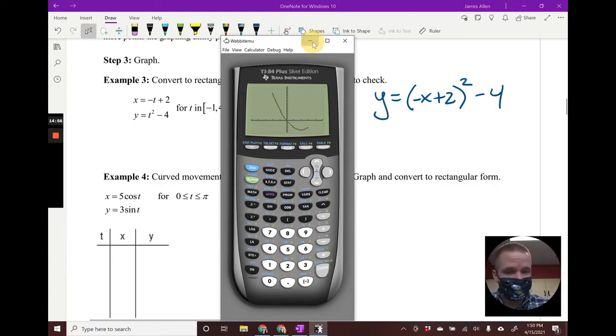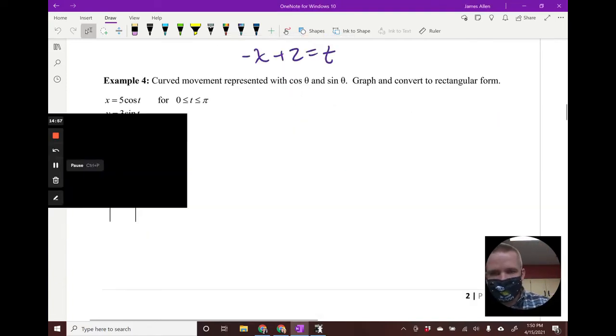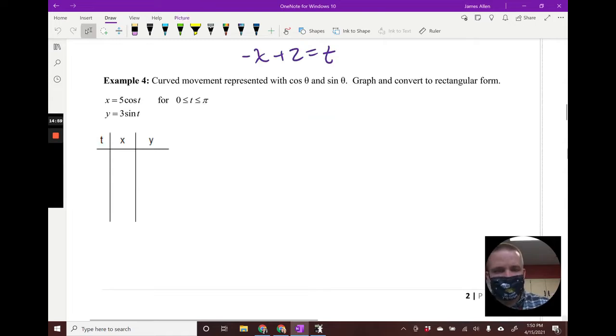Example four - this one gets a little crazy at the end, but I think you're going to enjoy it thoroughly. We have curved movement represented with cosine and sine. We want to graph and convert to rectangular form, going from zero to pi.